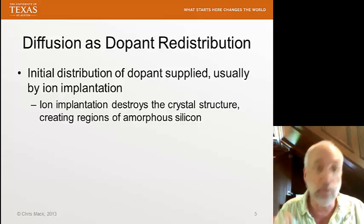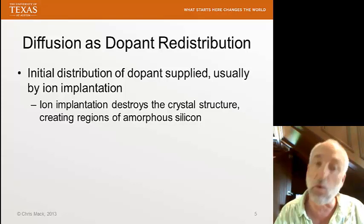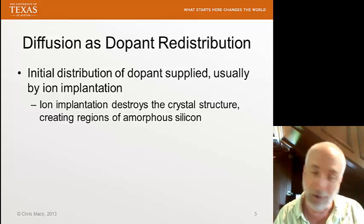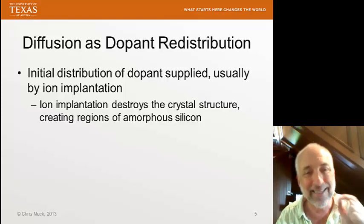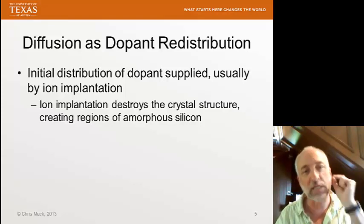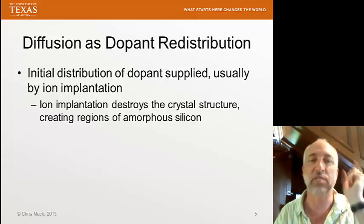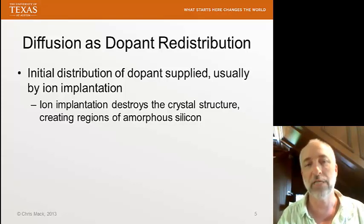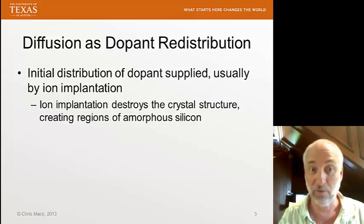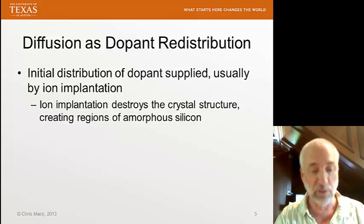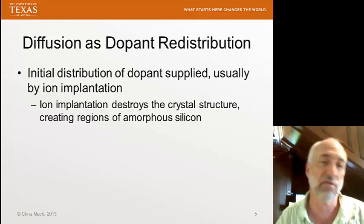If we've supplied the dopant by ion implantation, why do we have a diffusion step at all? Well, ion implantation — which we'll talk a lot more about later — takes ions, accelerates them to a very high velocity, and slams them into the wafer. Think about shooting a bullet into a tree: what happens to the bark, to the tree ring structure as the bullet embeds itself? It destroys it — the whole structure of the fibers all get broken.